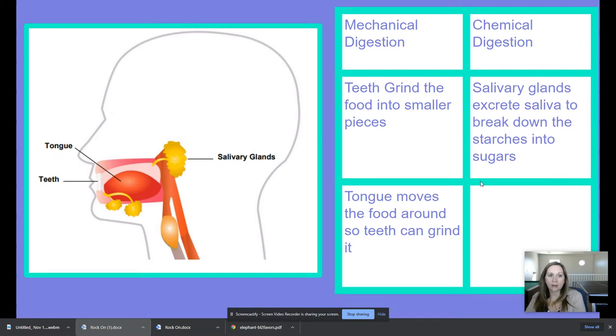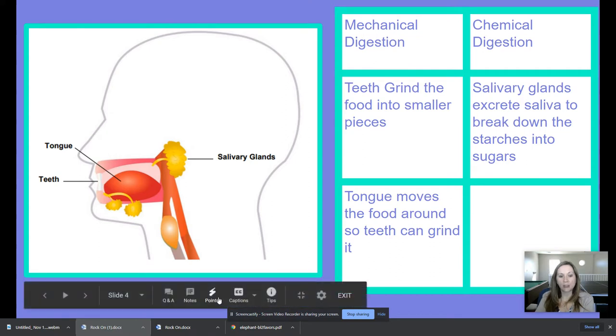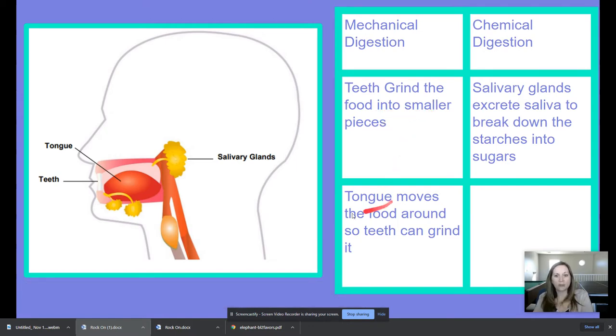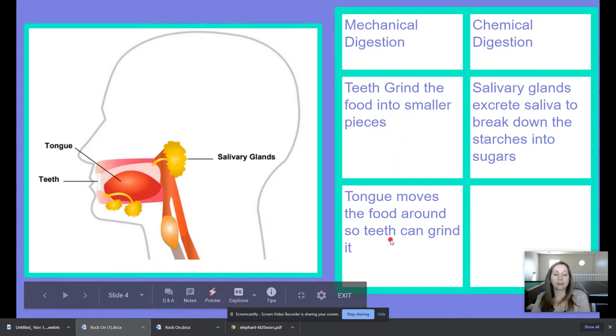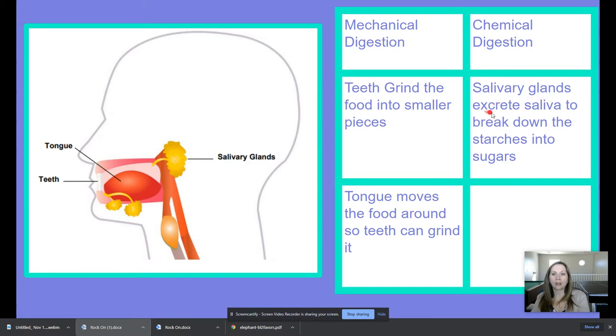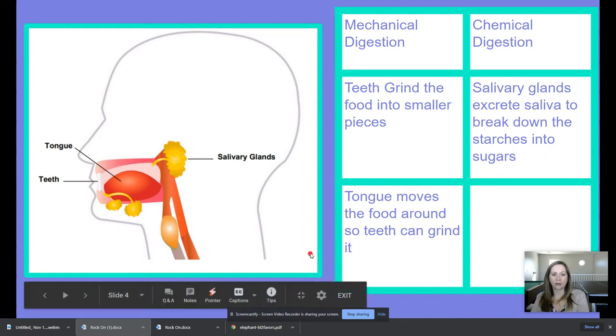So yesterday we learned about the first step in the digestive system which is in our mouth and we know that some mechanical digestion was happening. That's when our teeth were grinding the food into smaller pieces and the tongue was moving the food around so that the teeth could grind it. And then there was chemical digestion happening with the salivary glands and they were excreting saliva to break down the starches into sugars. And we saw that when we tasted our crackers.